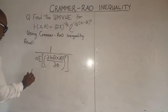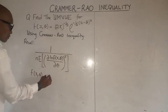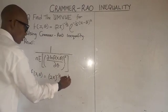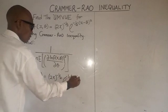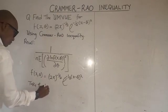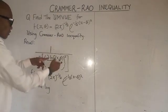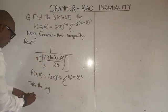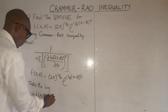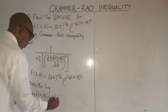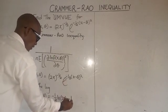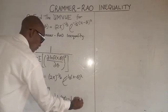So since this distribution is given, if we take the log value of this, we have minus one over theta squared, and to take the log of this part, we have one over theta squared times x minus theta squared.